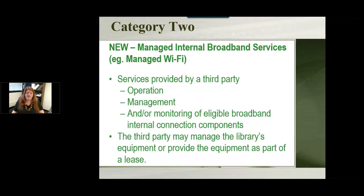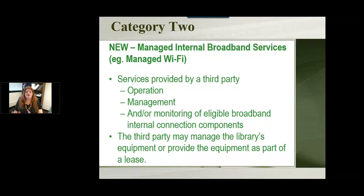Managed internal broadband services — also called managed Wi-Fi — is having a third party completely run everything related to your library's internet connection. You have nothing to do with monitoring or keeping up the equipment; it's all handled by a separate company. You contract with them and let it go — they handle everything including any problems or issues. If you hear about a company offering this kind of service in your area, look into it and see what it costs, because you might be able to get an E-Rate discount on it.